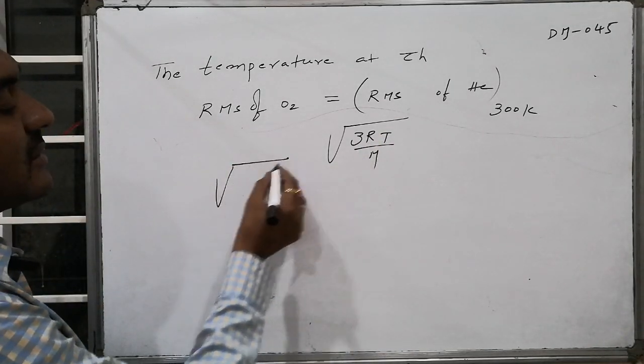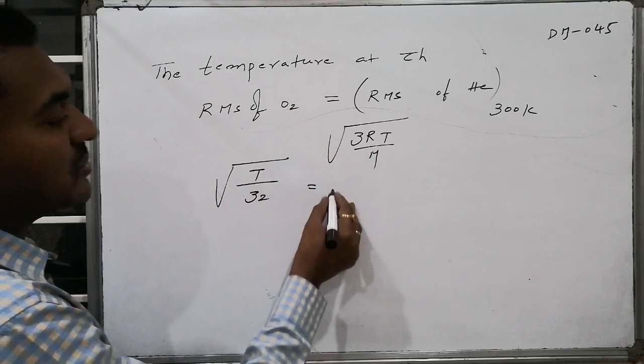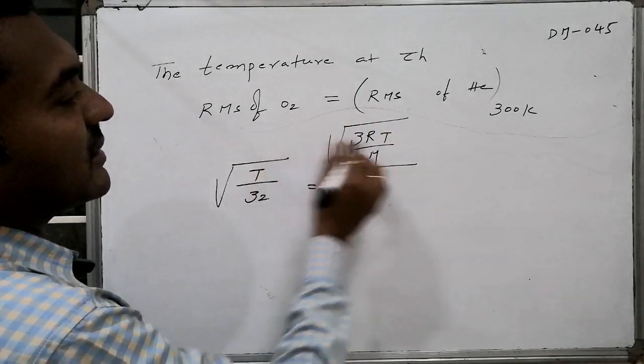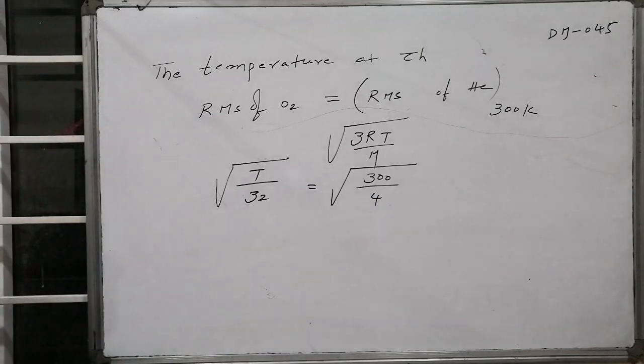So therefore here this temperature is unknown T, whereas gram molecular weight of oxygen is found to be 32, becomes equal to here temperature is found to be 300, divided by helium gram molecular weight which is found to be 4.